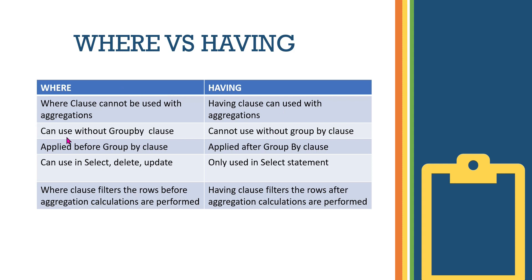WHERE clause cannot be used with aggregations. The aggregation functions include MAX, COUNT, AVERAGE, and SUM. WHERE clause cannot be used with these aggregation functions. However, HAVING can be used with them. WHERE is used to filter rows using general conditions, but when you need to filter using aggregate functions, you cannot use WHERE clause — there is no support there.